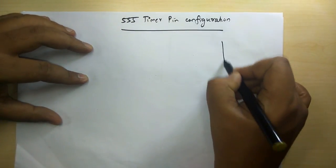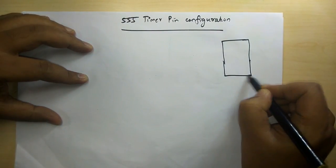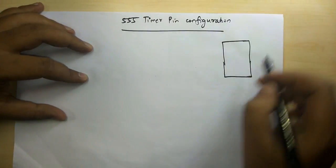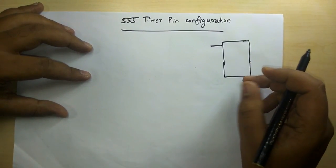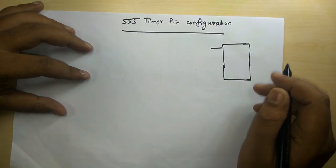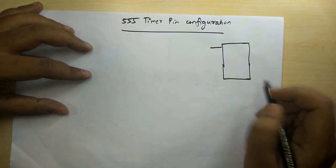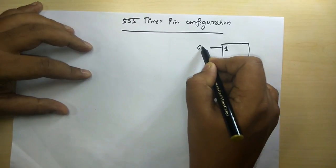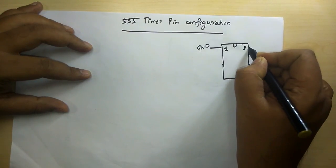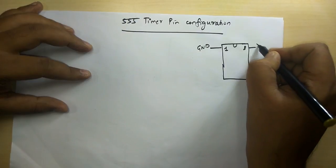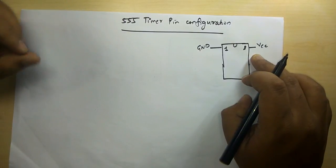Let's understand the pins — what is the function of each pin, how many pins does it have, and what are the different functionalities each pin serves. In this example I'm considering an 8-pin DIP IC. For the IC to function, I need to supply energy — a potential difference — given by the VCC and the ground. The VCC supply ranges from 5 volts to 18 volts.